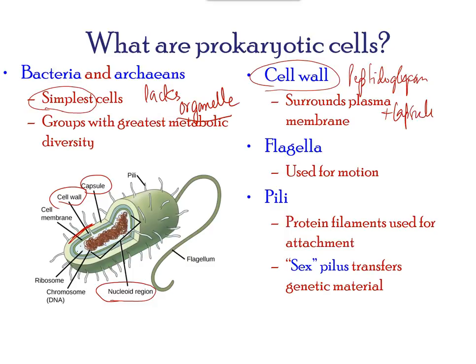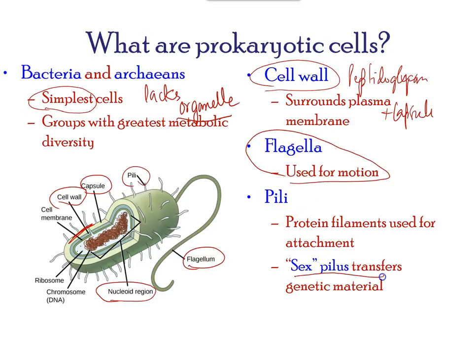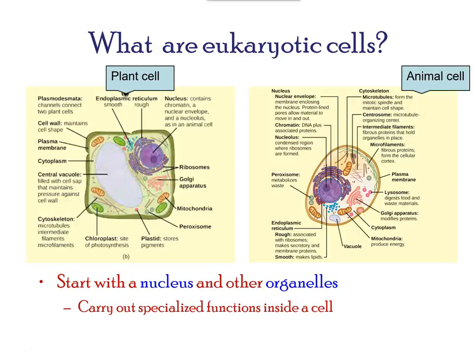Some prokaryotes have flagella, pili, or fimbriae. Flagella are used for locomotion, while most pili are used to exchange genetic material during a type of reproduction called conjugation.